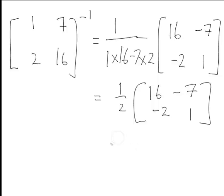Which would simplify further to just give us 8, negative 7 divided by 2, negative 1, a half.